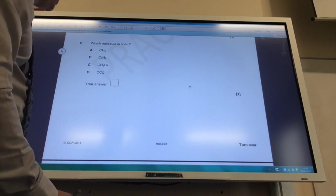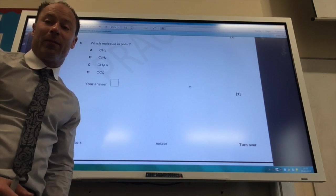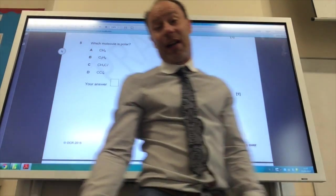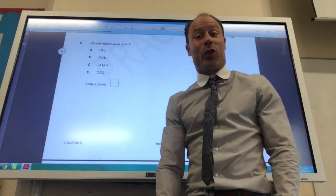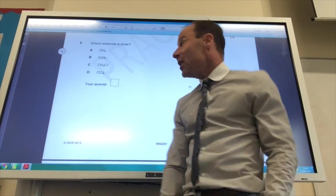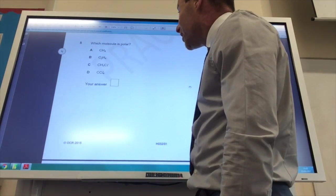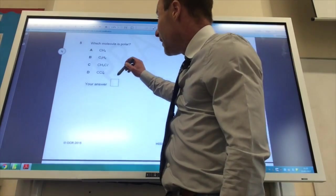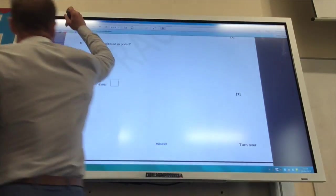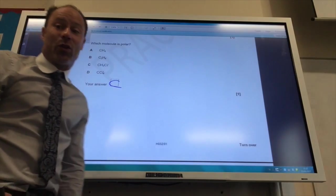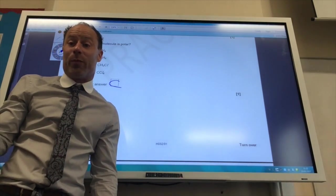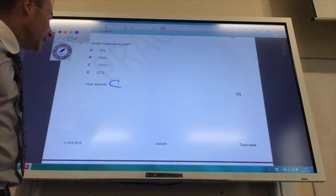Now question 5. Which molecule is polar? You need an electronegative element in there, so two elements of different electronegativities, and it's got to be asymmetrical. The answer is going to be C. Carbon tetrachloride is of course symmetrical, so overall the molecule is non-polar.